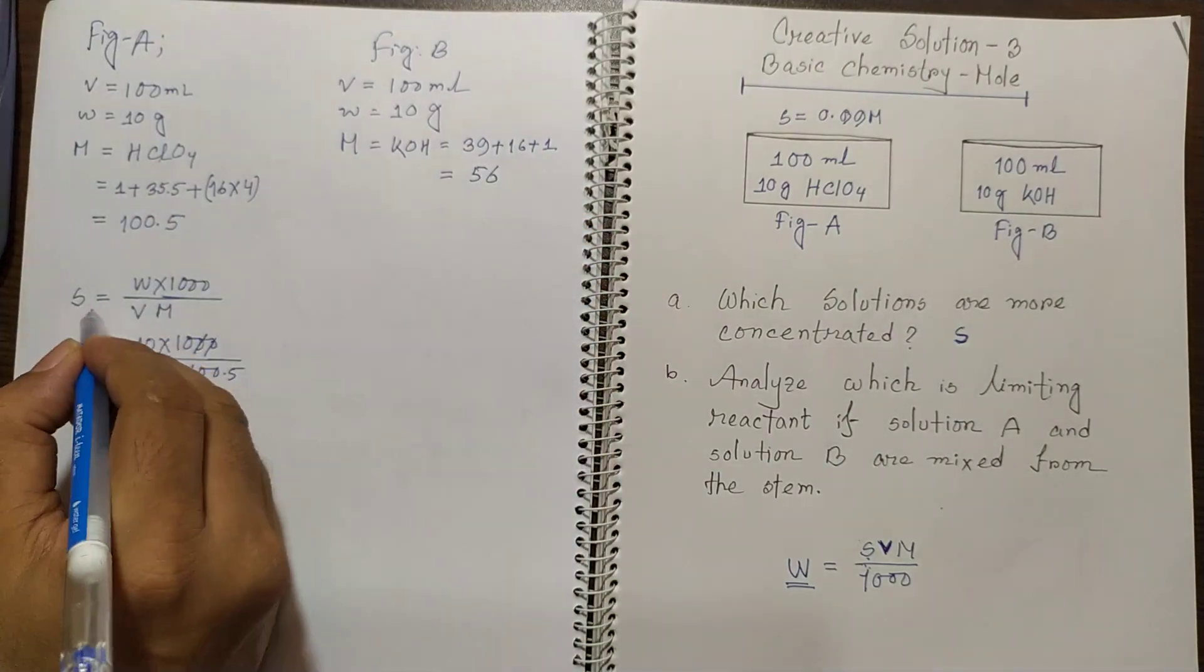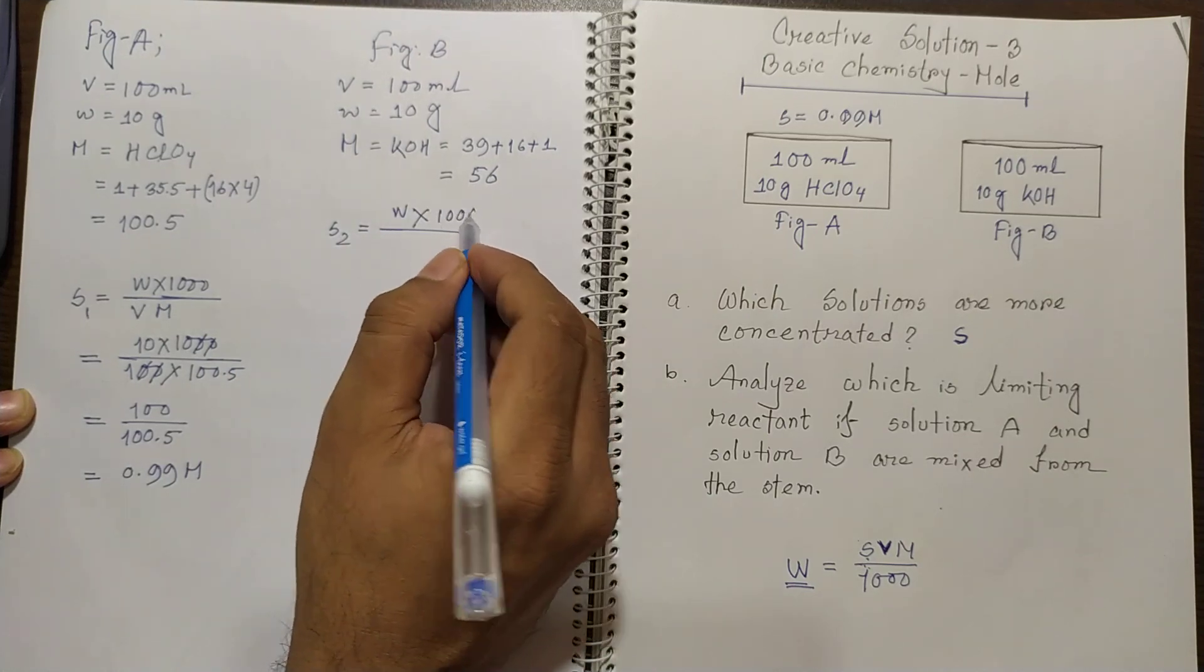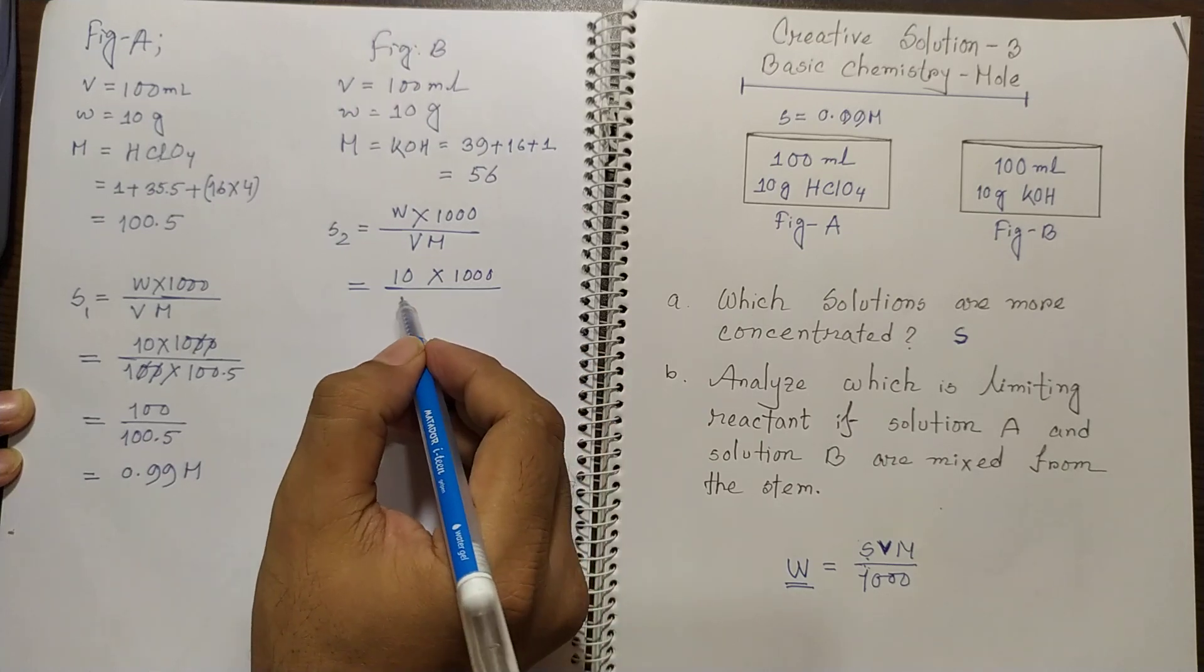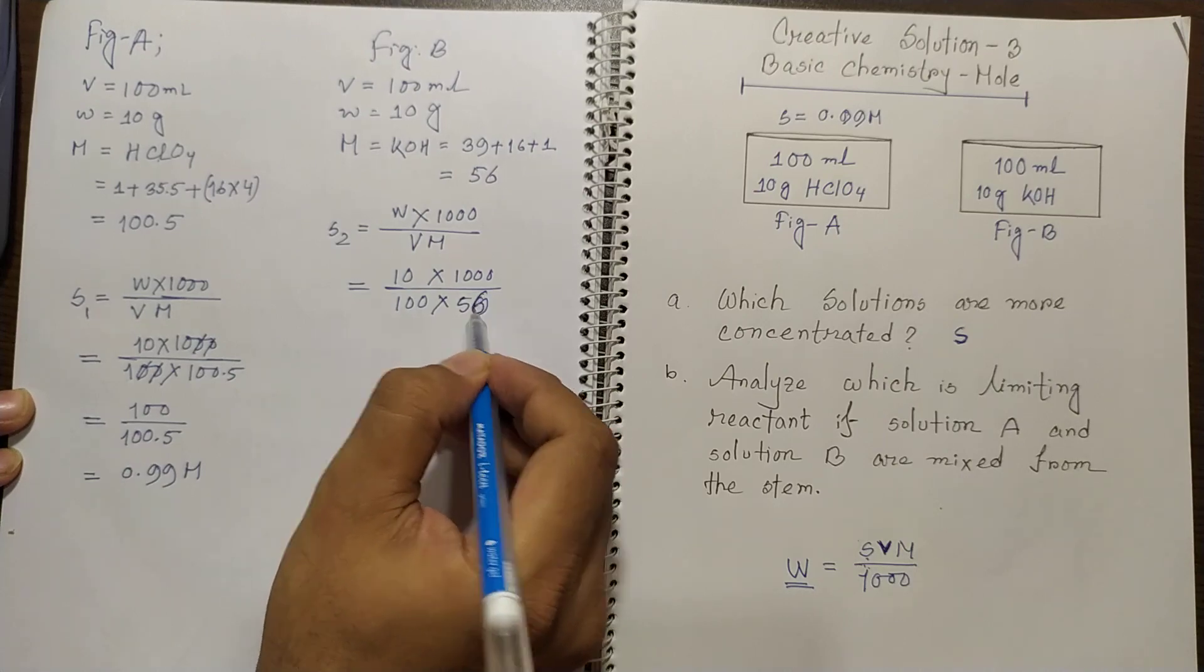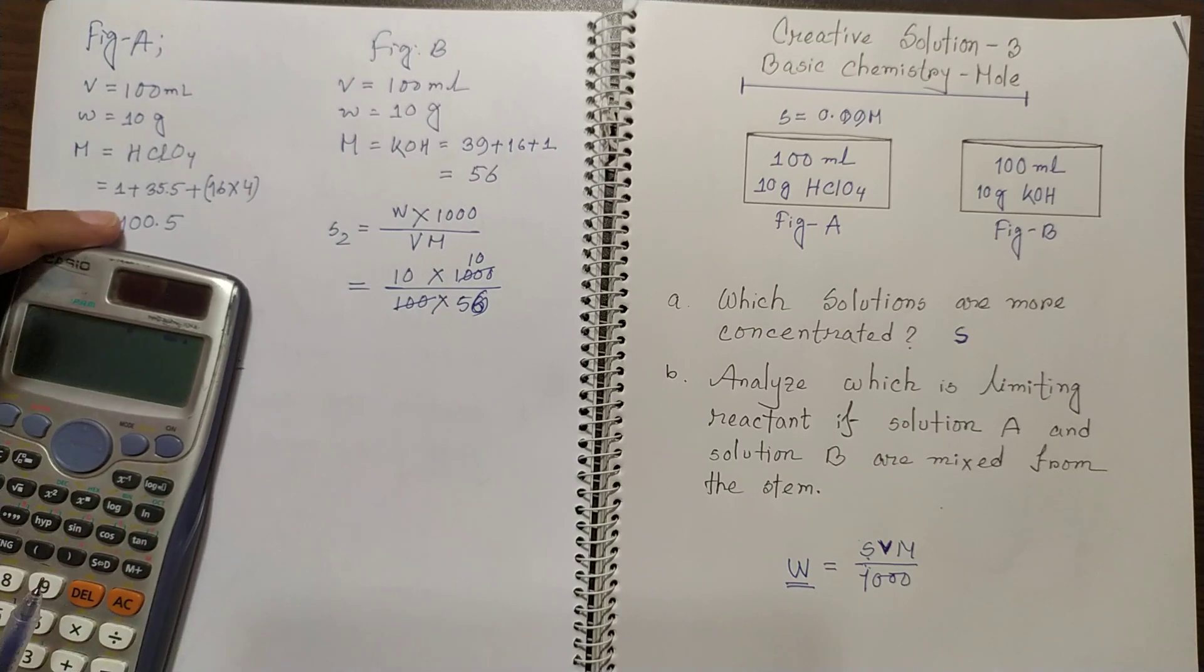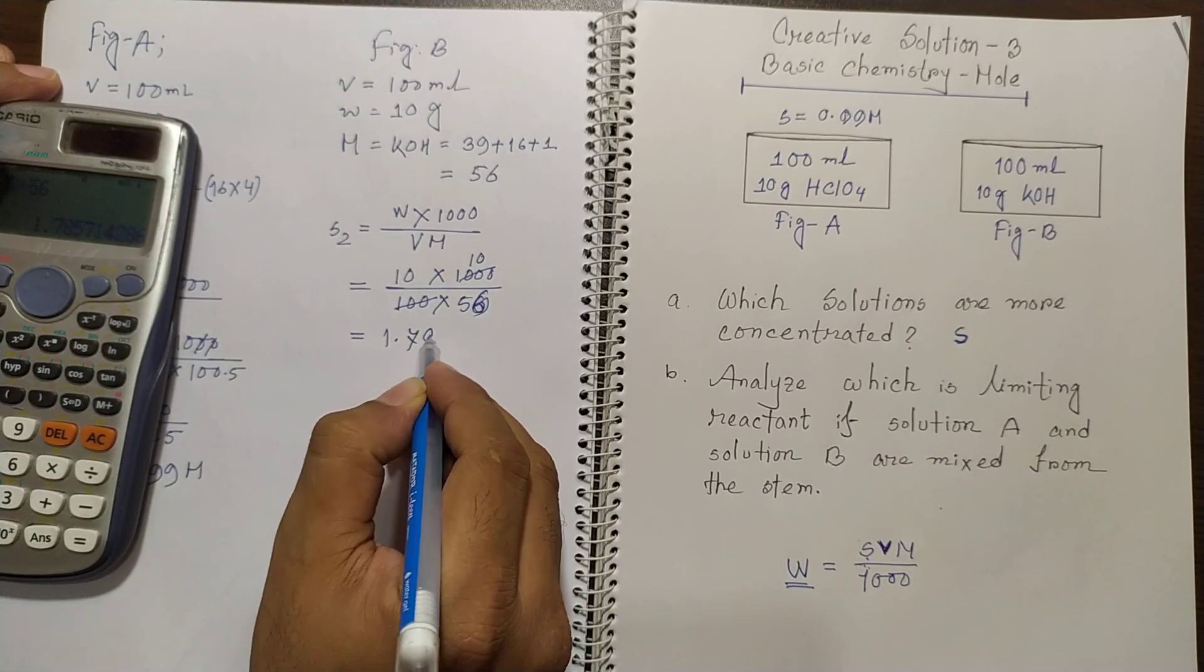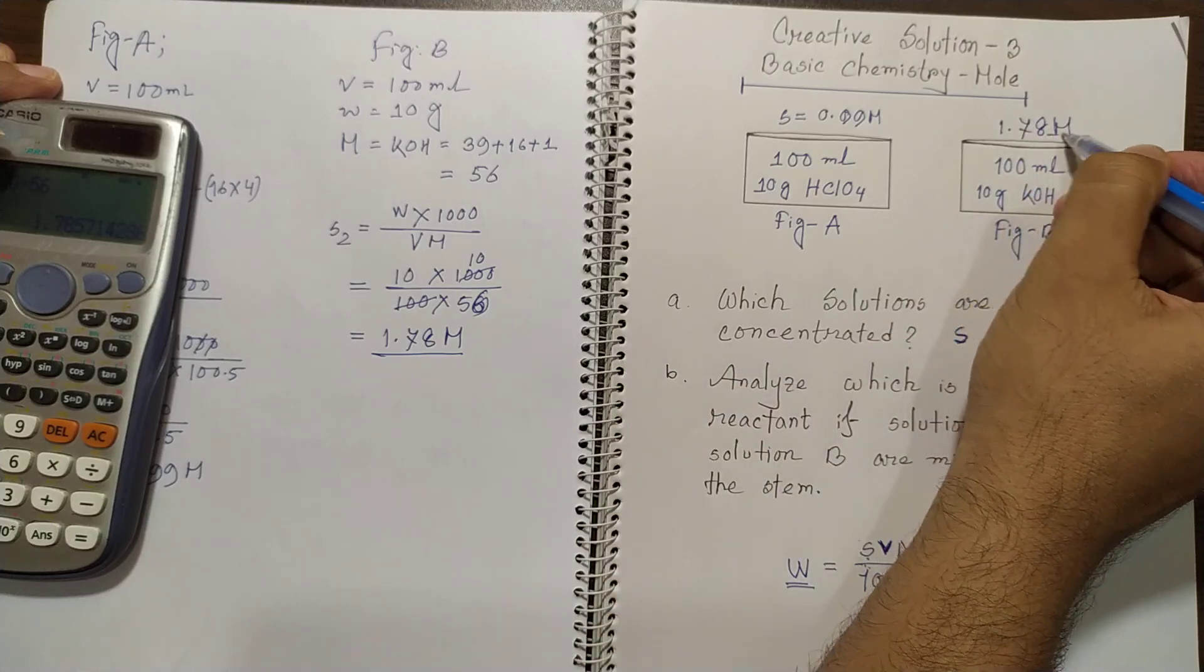So now this is S1. Now think S2 would be W times 1000 over V M. So W is 10 times 1000 over 100 times 56. So it would be 100 over 56. That would be 1.78 molar. Now you got another concentration 1.78 molar.